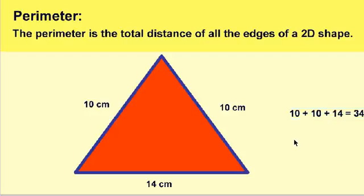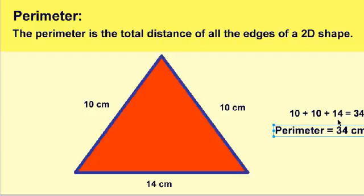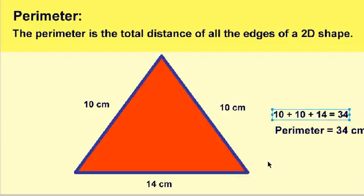So let's add. We have 10 plus 10 plus 14, which gives us a total of 34. So we can say that the parameter of this triangle right here is 34 centimeters. Why is it 34 centimeters? Because we added this side.